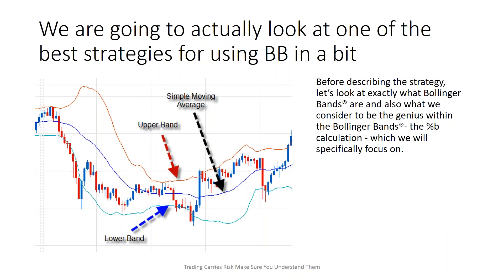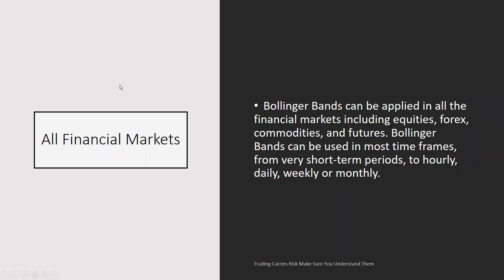There has been an abundance of information published on how to trade with Bollinger Bands, and we have to understand what these bands are and the genius behind them, including the percent B calculation. Bollinger Bands consist of a simple moving average line with an upper band and a lower band calculated using a 2-day and 20-day moving average with a standard deviation. They can be applied in all financial markets including equities, forex, commodities, and futures, across timeframes from very short-term to hourly, daily, weekly, or monthly charts.